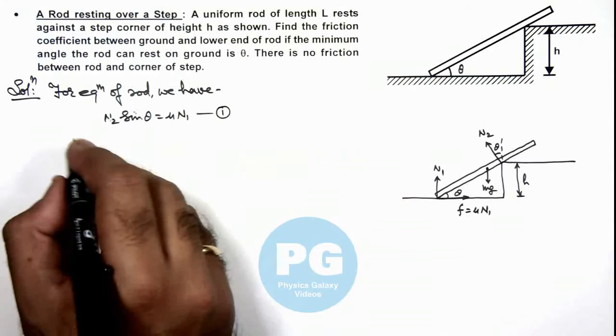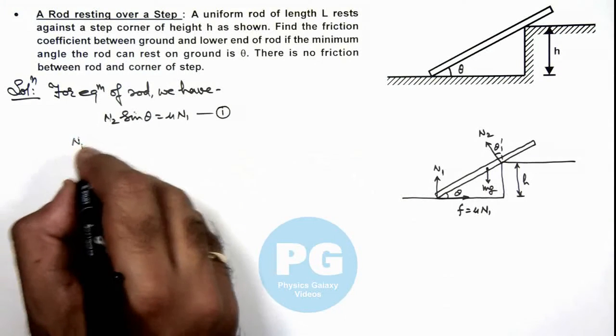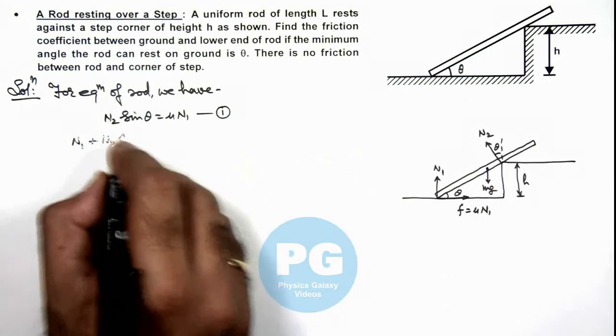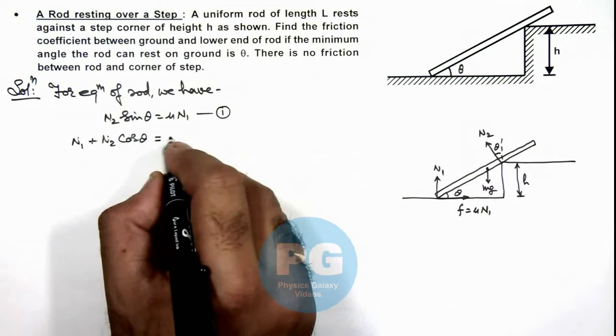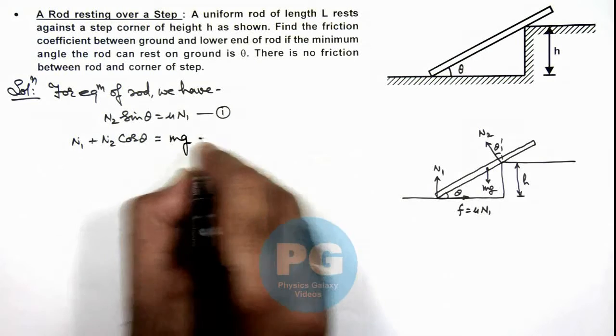And in vertical direction we can write N1 plus N2 cos theta is equal to mg. That is our equation 2.